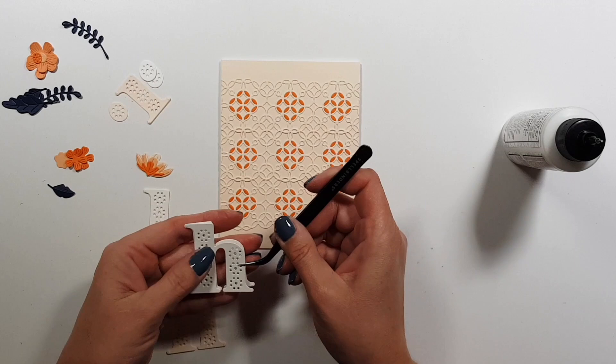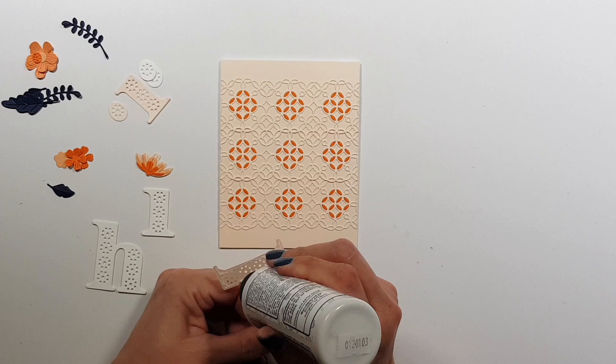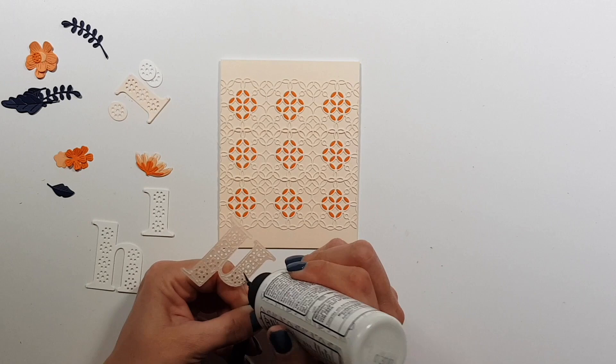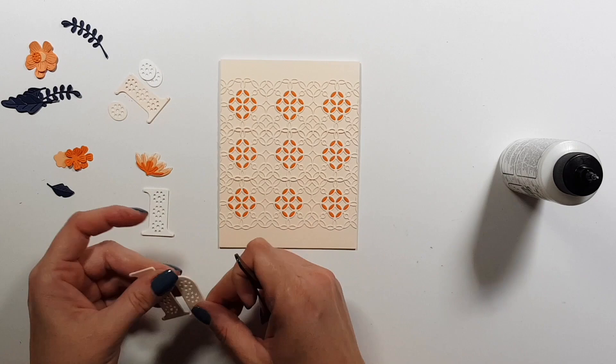Just add a little bit of liquid glue and then you can place the die cut over the card base and fill those shapes in. Because they did stay in the whole thing, they stayed together, so it did not fall apart. Otherwise you would have to do it one by one then it would take a little bit longer.